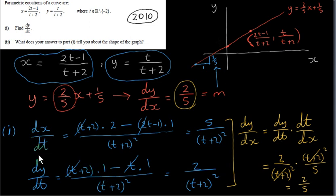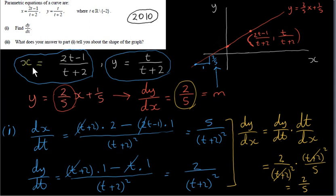Of course, there are times when you have no choice but to use this parametric differentiation method, because it might not be possible — or at least not easy — to write y in terms of x directly. For this example we could do it, but that won't always be the case.